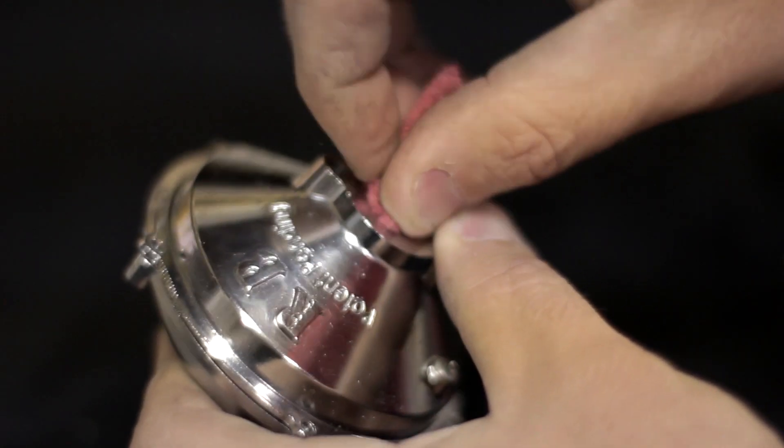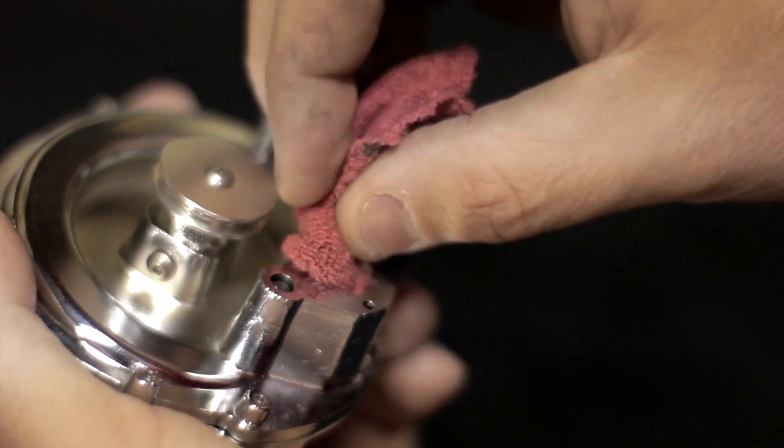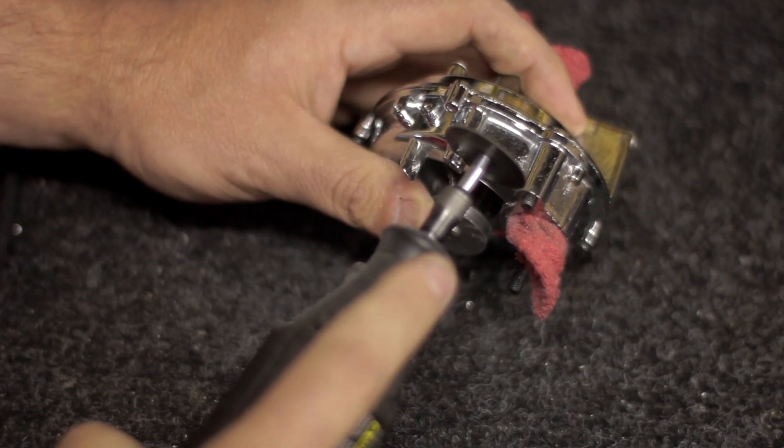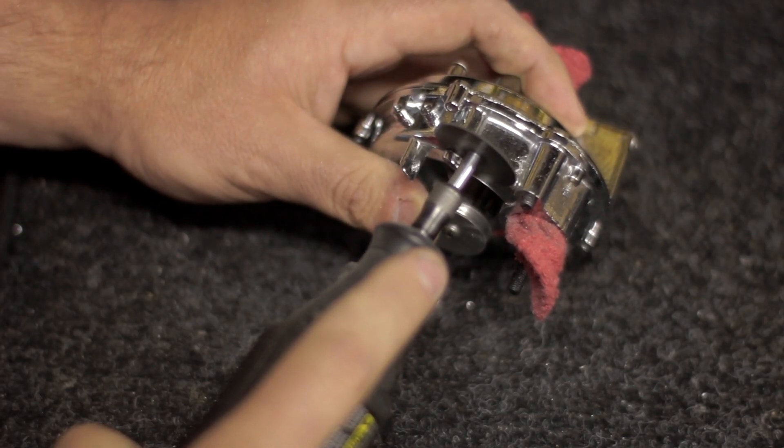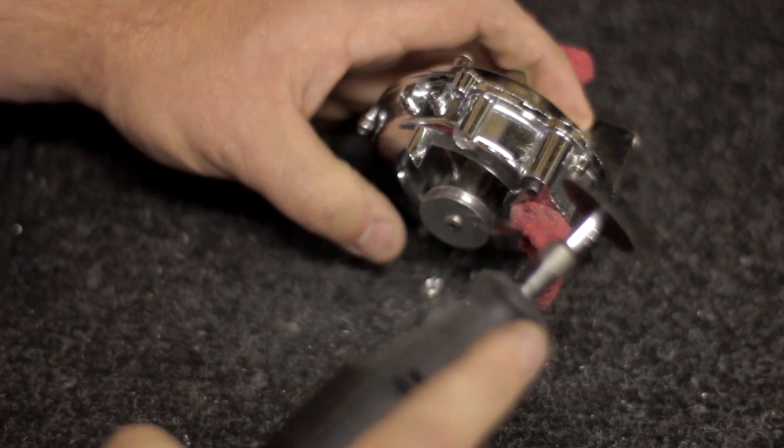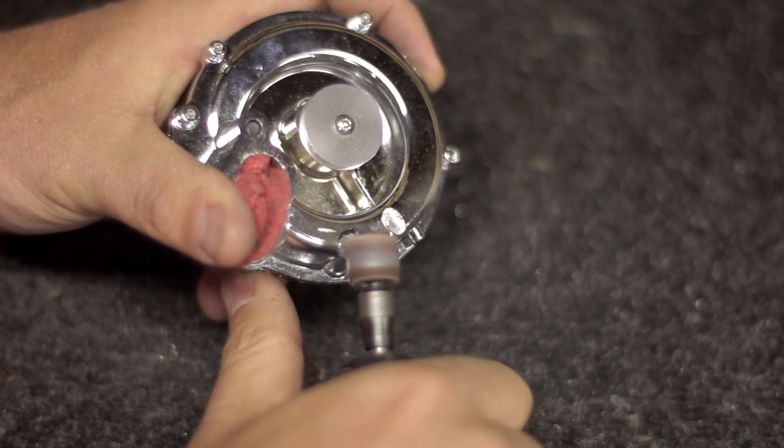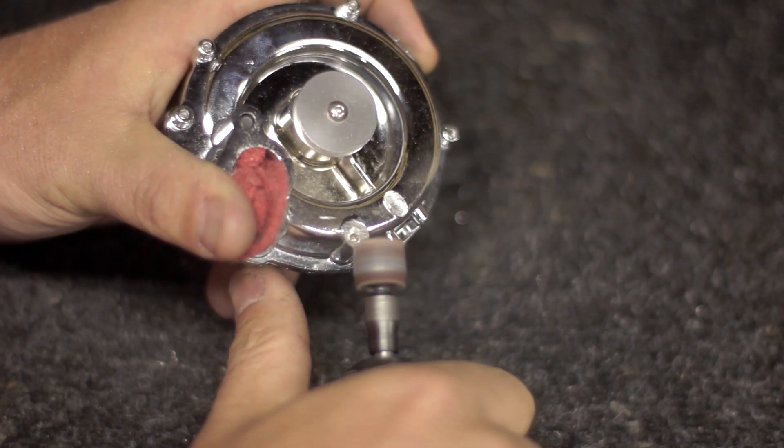First thing you want to do is block off the intake and the outlet for the supercharger. Then, you want to use a standard cutoff wheel for the Dremel and cut off both of these mounts for the pulleys. Next, you want to clean it up so there's no sharp edges.